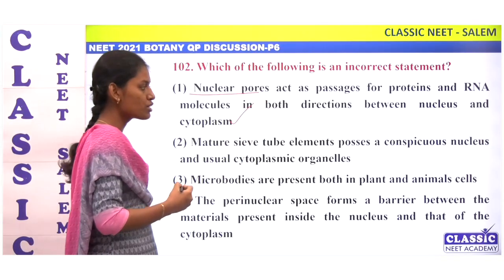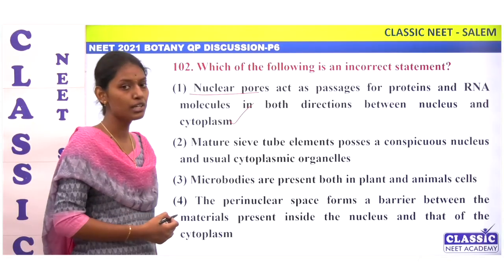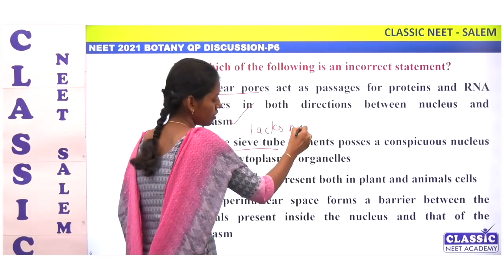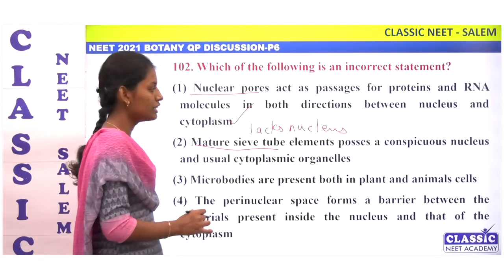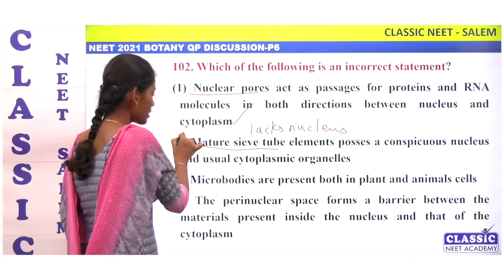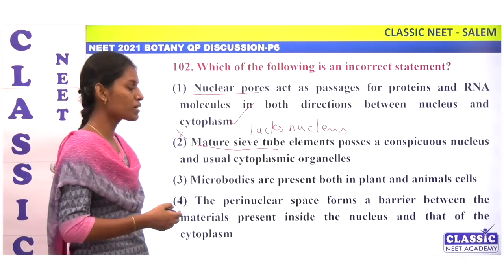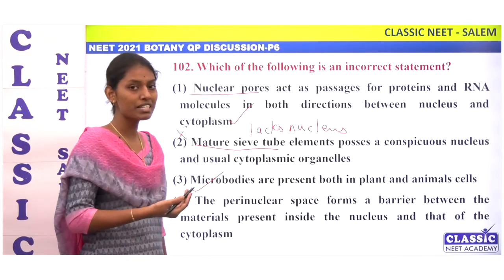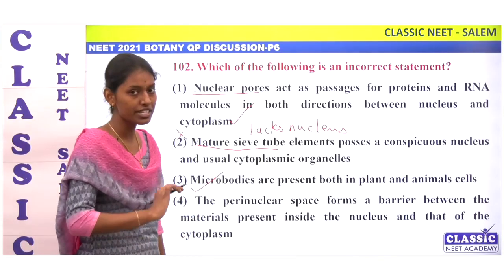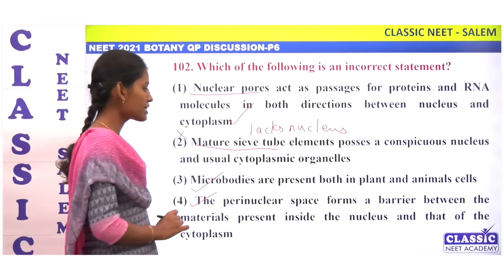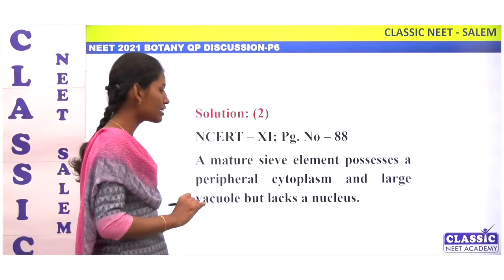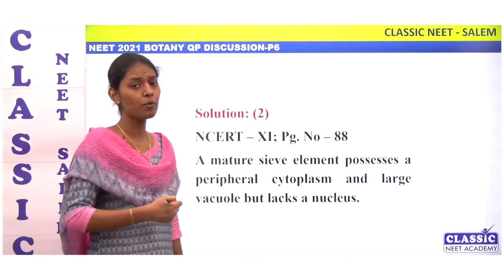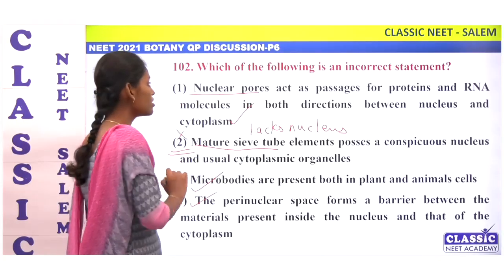Statement 2: matured sieve tube element possesses a nucleus and cytoplasmic organelles. This is wrong — sieve tube lacks a nucleus. It performs its function with the help of the companion cell nucleus. Statement 3: microbodies are present in both plant and animal cells — correct. Statement 4: the perinuclear space forms the barrier between material inside the nucleus and the cytoplasm — also correct. So statement 2 is incorrect.